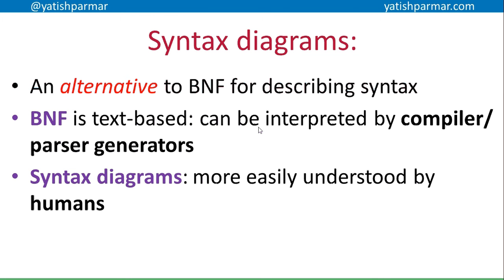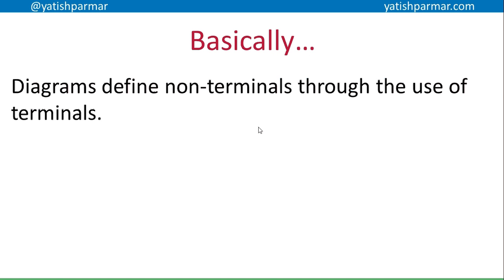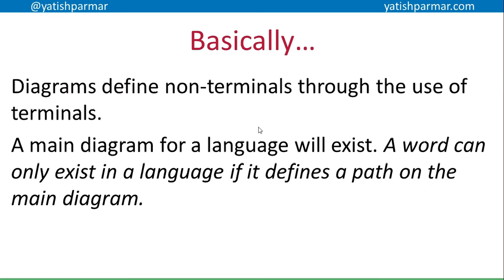Another name for syntax diagrams is rail tracks or railroad diagrams, because they basically work from left to right. You just follow the pathway and you can build up an understanding of the language. Diagrams define non-terminals through the use of terminals — that's standard thinking about BNF. A main diagram for a language will exist, and a word can only exist in the language if it defines a path on that main diagram. If you have a word which doesn't relate to anything, then it doesn't belong there.